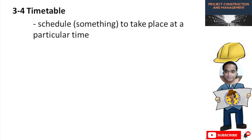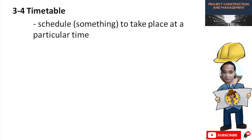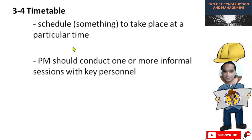Next is the timetable. A timetable is a schedule for something to take place at a particular time — for example, excavation may be scheduled for three days. The project manager should conduct one or more informal sessions with key personnel. Key personnel are those directly handling your projects. You can identify key personnel by observing that if they are absent, you will have problems, as they handle the important jobs or activities.